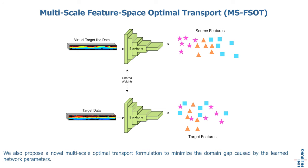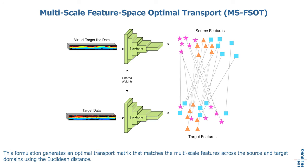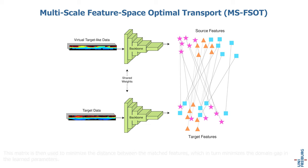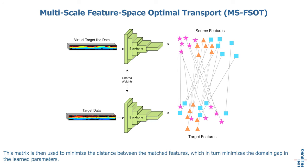We propose a novel multiscale optimal transport formulation to minimize the domain gap caused by learned network parameters. This formulation generates an optimal transport matrix that matches multi-scale features across source and target domains using the Euclidean distance. This matrix is then used to minimize the distance between matched features, which in turn minimizes the domain gap in the learned parameters.